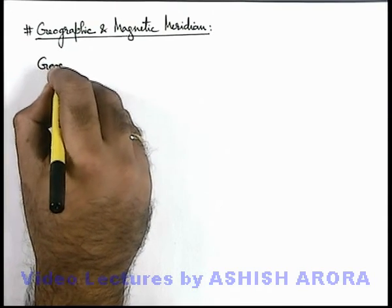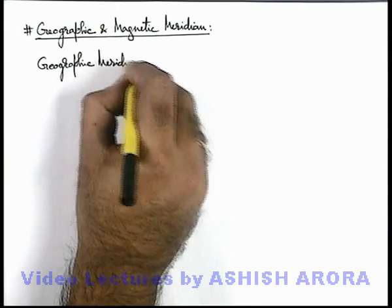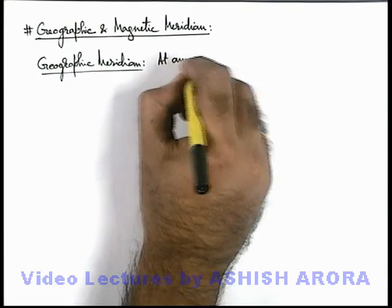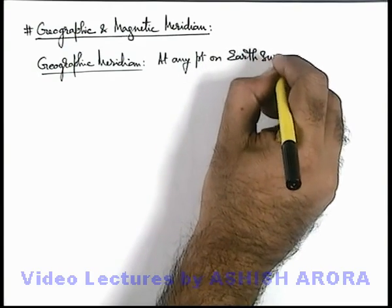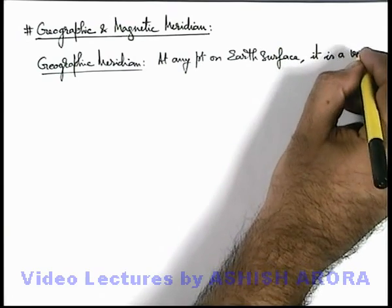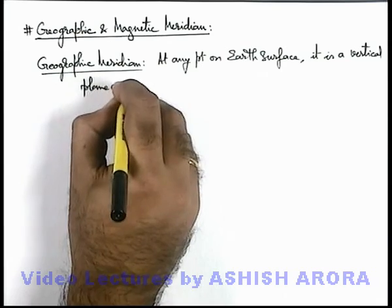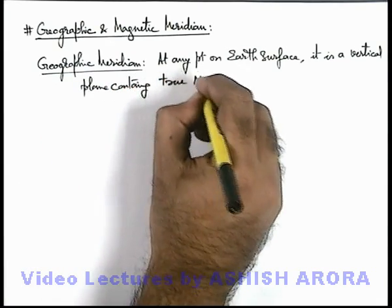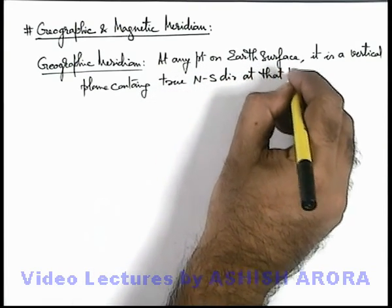The very first is geographic meridian. About geographic meridian we can write that at any point on Earth's surface, it is a vertical plane containing the true north-south direction at that point.